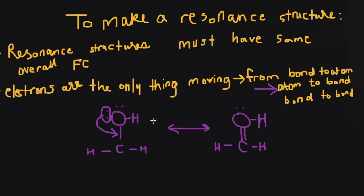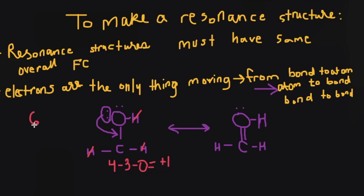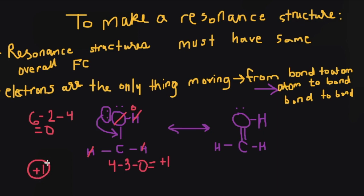Let's check that the formal charges of these structures are the same. Hydrogens are going to be zero. For carbon: four valence electrons minus the three bonds it's making minus zero lone pairs gives us a positive one charge on the carbon. For oxygen: six valence electrons minus the two bonds it's making minus the four lone electrons gives us zero. That means every atom has a formal charge of zero except carbon, which is positive one. So if we add up all the formal charges, we get a positive one for the net overall formal charge of this shape.